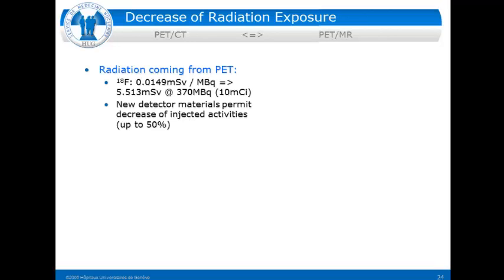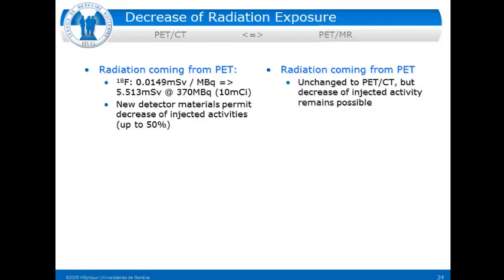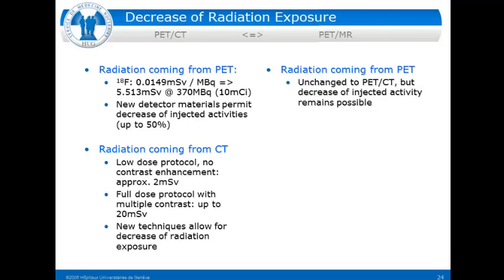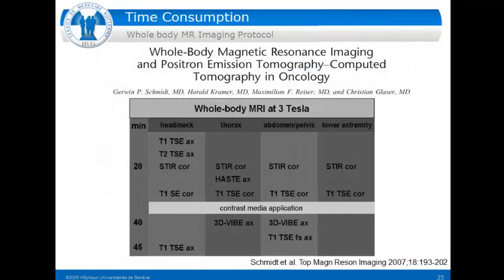On radiation exposure: depending on the activity injected, we are up to five or a little more millisieverts from PET, but new detector materials now permit decreasing injected activities by up to 50 percent. This is unchanged in the PET-MR system. From CT, low-dose protocols exist — in cardiac imaging without contrast you can go down to two millisieverts, but full-dose protocols reach 10 to 20 millisieverts — so the main potential for dose reduction comes from CT. Of course, there is no irradiation from MR.